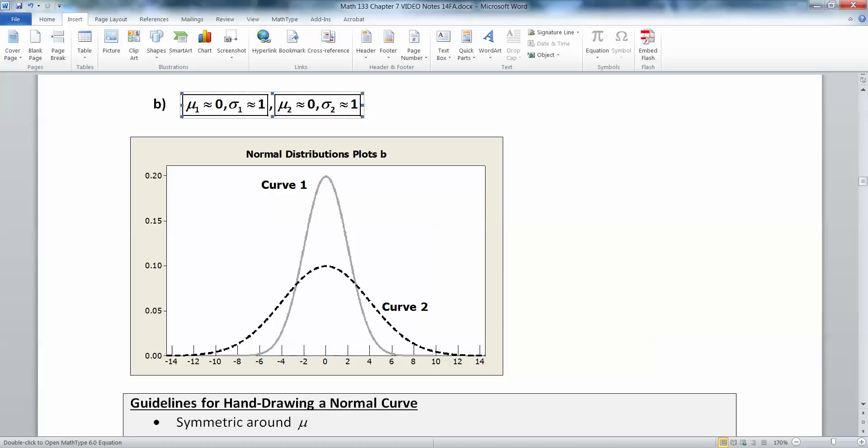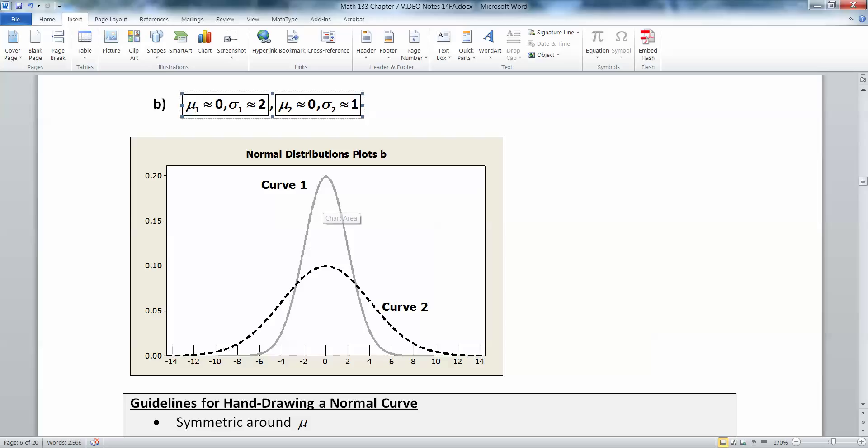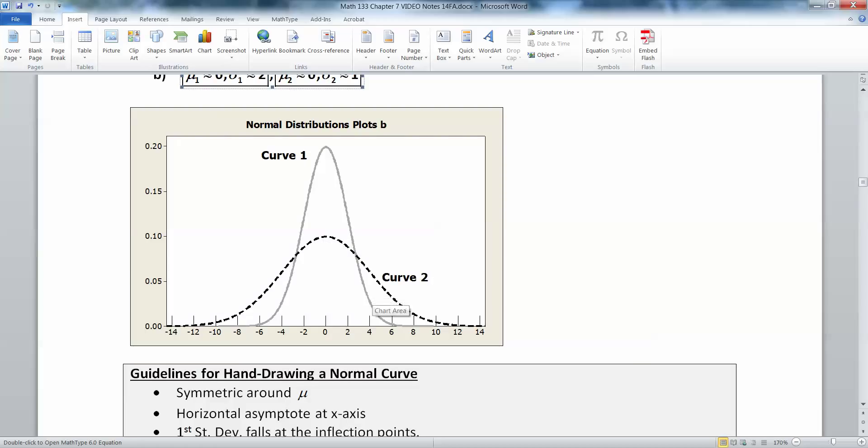Now curve one looks like the inflection points happening right about where my cursor is. That's about two. So again, how am I eyeballing that? Well, it's an art, but really what you're doing is you're looking for where up here at the top of the peak, it's kind of bowl shaped down, concave down. And over here at the tails, it's concave up. So somewhere in the middle, it switches. And it's usually about, if you think of the bottom of curve is at zero and the top of the curve is at 0.20, it's a little bit above the 0.10 mark. So 0.10 is kind of right there. It's up a little bit above that. So that's about two. If you look at the x-axis, about two.